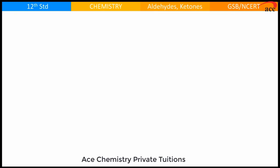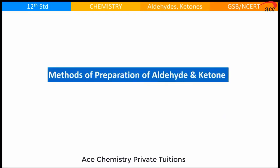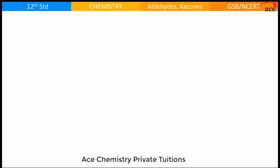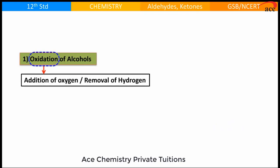Let us start with some important methods of preparation of aldehydes and ketones. Let us start with oxidation of alcohols. What do you mean by oxidation? Oxidation is basically addition of oxygen or removal of hydrogens.